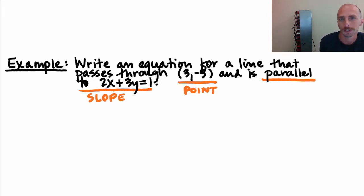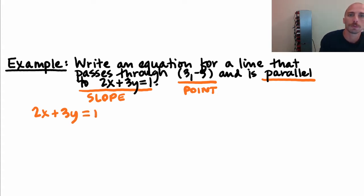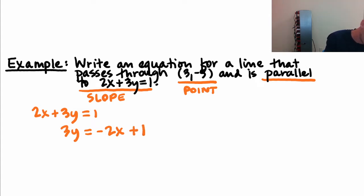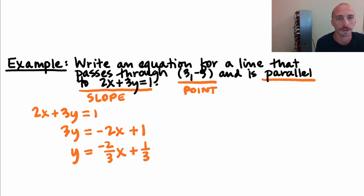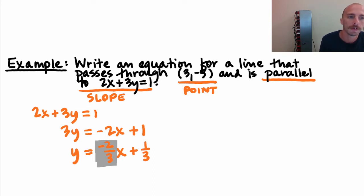I'm going to solve for y. Starting with 2x + 3y = 1, I subtract 2x from both sides to get 3y = −2x + 1. Then I divide both sides by 3, giving y = −(2/3)x + 1/3. We only really care about the slope. Parallel to this line means it's going to have the same slope, so the slope is −2/3. With a point and a slope, I'm ready to write an equation using point-slope form.